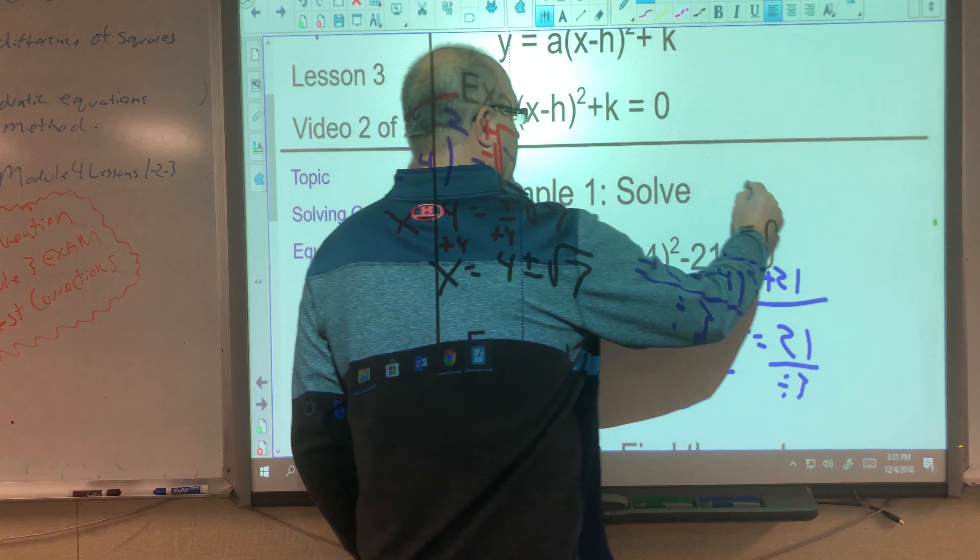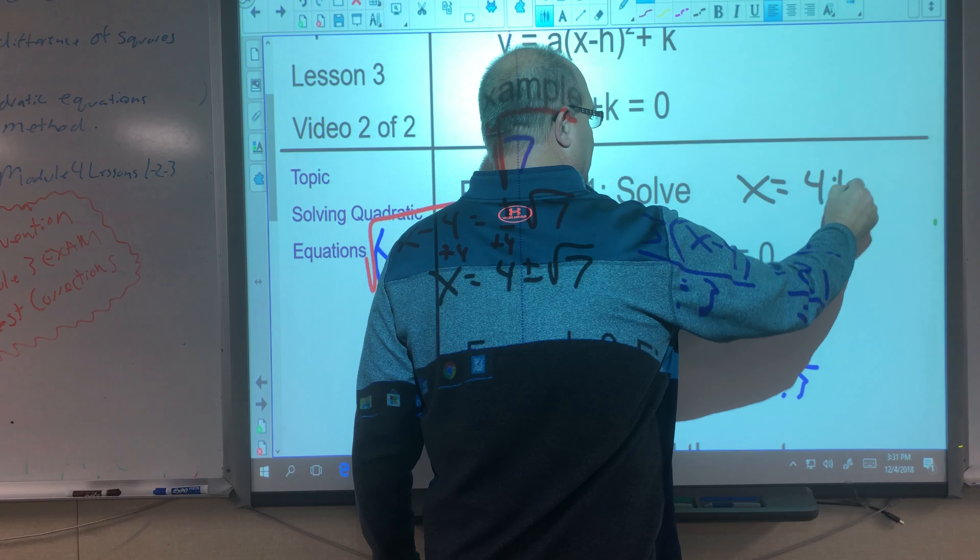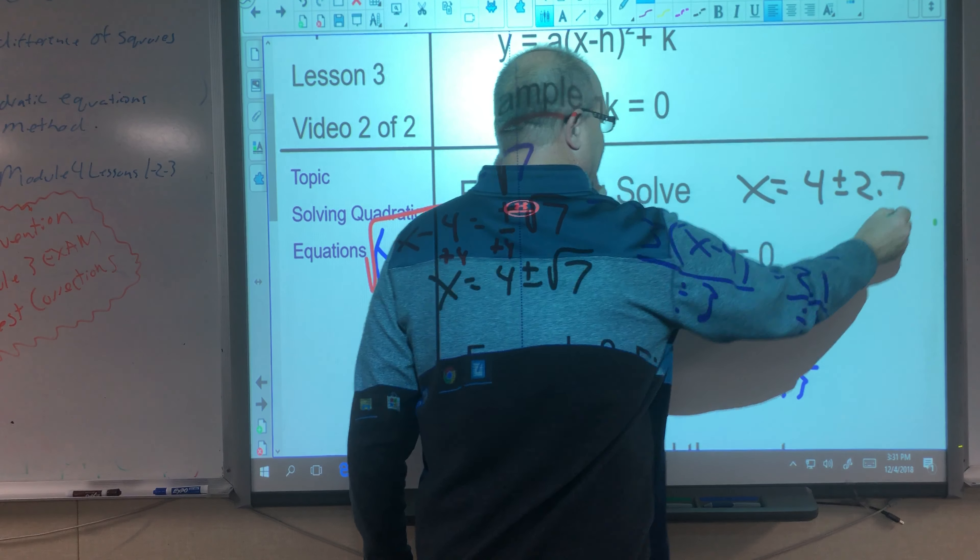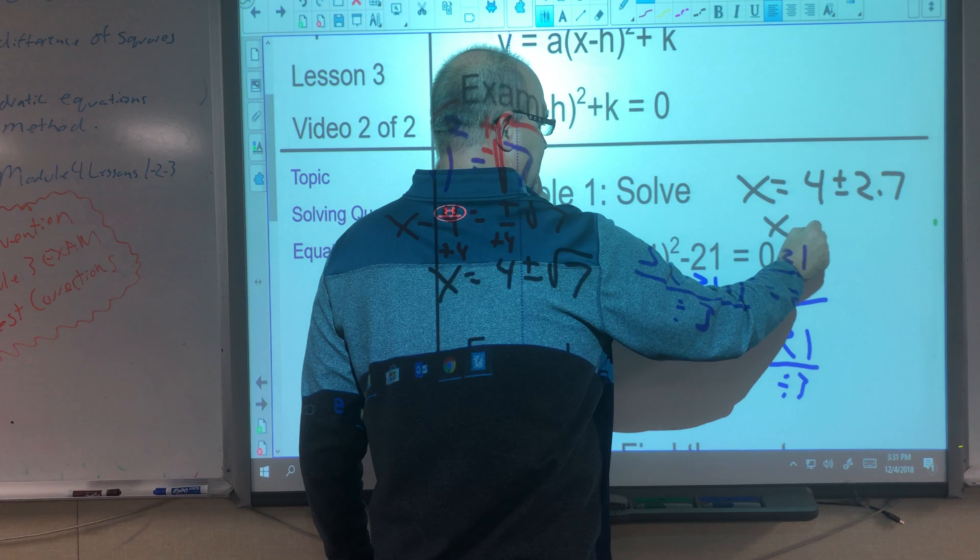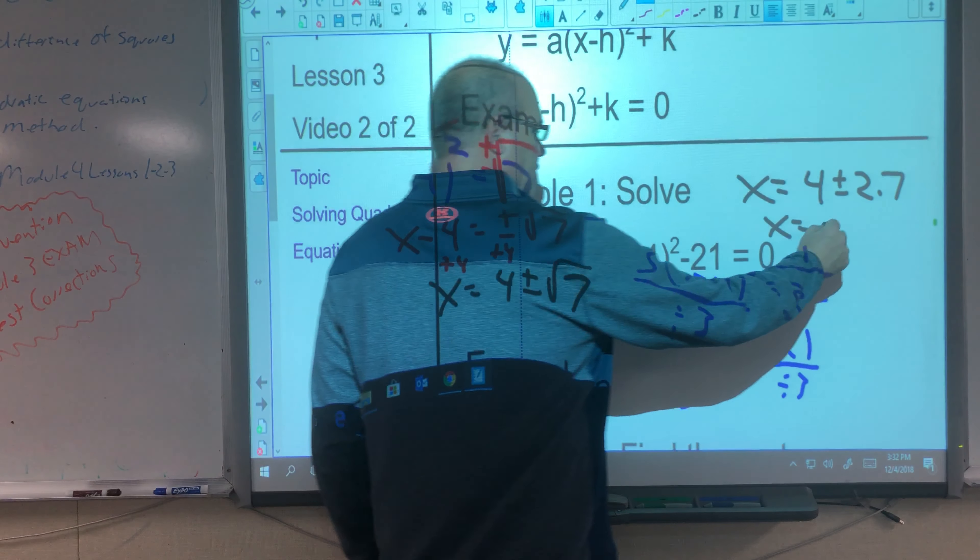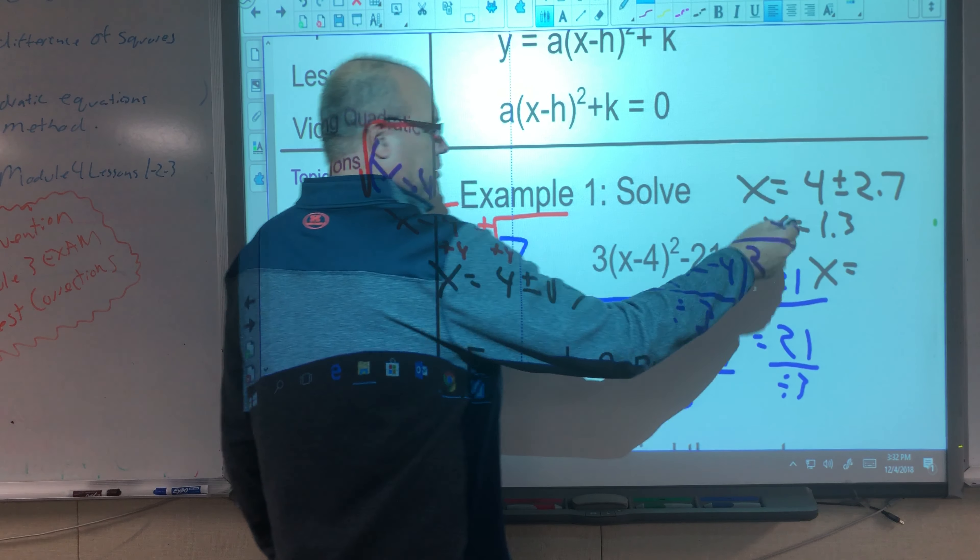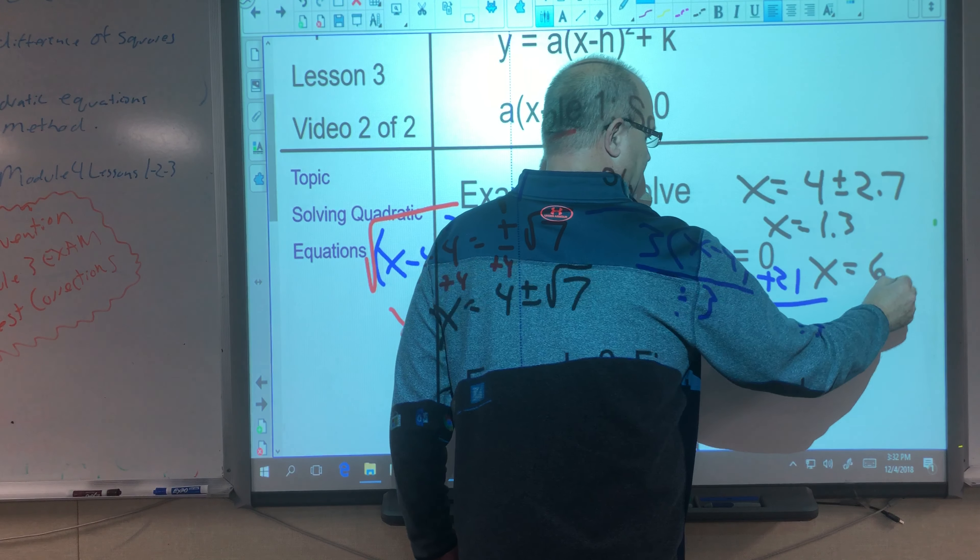So this is going to be x equals approximately 4 plus or minus 2.7. So then you're going to get x equals 4 minus 2.7, which is 1.3, and x equals 4 plus 2.7, which is 6.7.